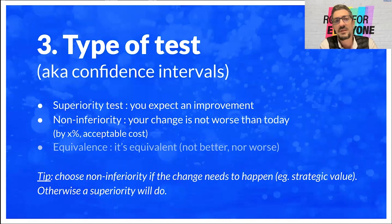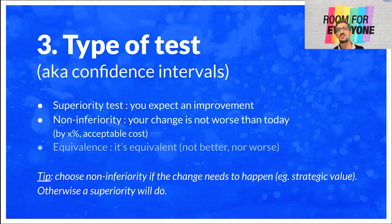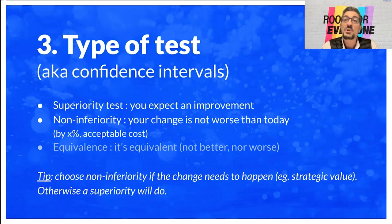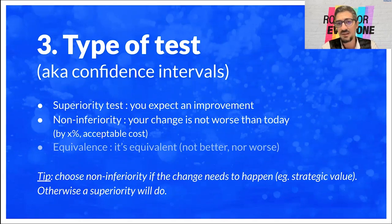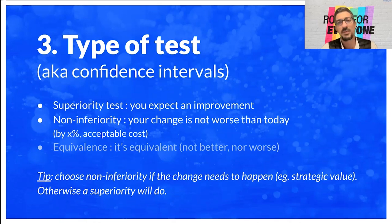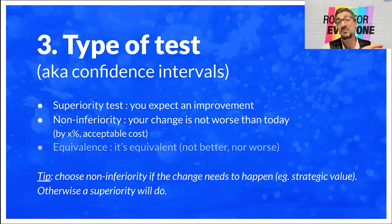Let's go to the third block, which is the topology of tests. There are three types of tests. A superiority test means you expect your change to be better than what customers are currently exposed to. A non-inferiority test means your change will not be worse than what you're offering today — and sometimes you also define by how much it will not be worse, i.e., the acceptable cost. The tip here: choose a non-inferiority test for changes that need to happen regardless — think re-platforming. If re-platforming needs to happen, there's no point hoping for a superiority test; a non-inferiority test will do.